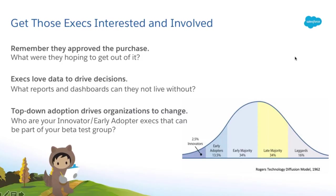The first tip to get your executives interested and involved is to remember that they approved the purchase. Whoever's budget this came out of — from the president to the chief sales or revenue officer, the chief marketing officer — they were hoping to get something out of Salesforce. They watched an awesome demo, heard friends talking about Salesforce, or had used it before at a company. Think about what they were hoping to get out of it, because it's going to be the basis of your influencer campaign.